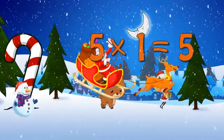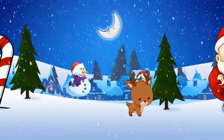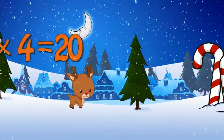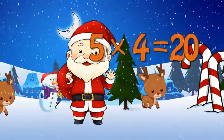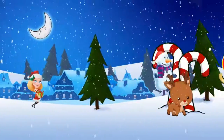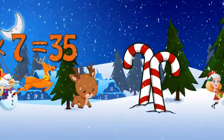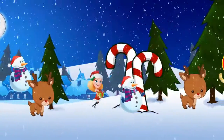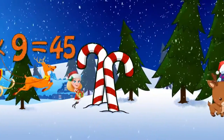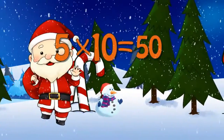Five times one is five, five times two is ten, five times three is fifteen, five times four is twenty, five times five is twenty-five, five times six is thirty, five times seven is thirty-five, five times eight is forty, five times nine is forty-five, five times ten is fifty.